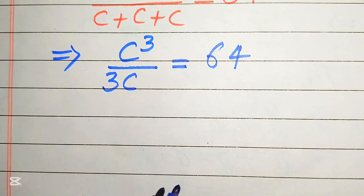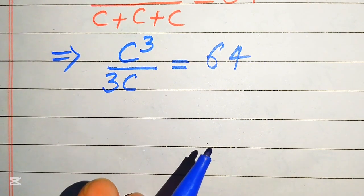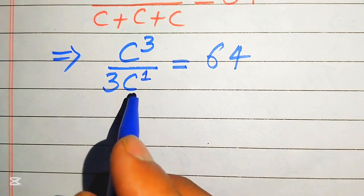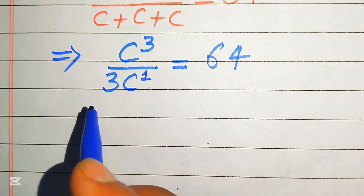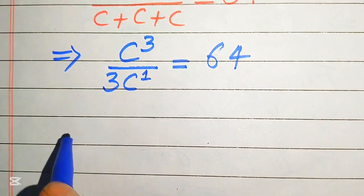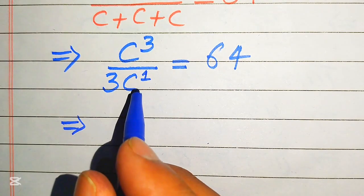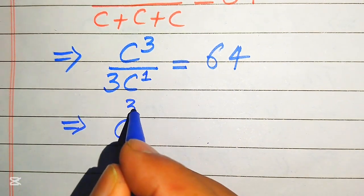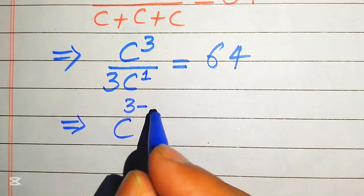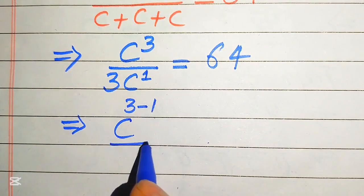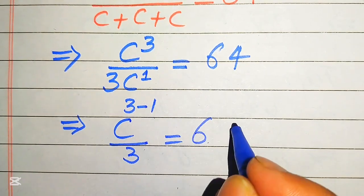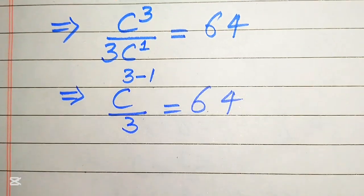Now in the next step we need more simplification. Focus on the denominator term — its exponent is 1 and the bases are the same — so we subtract the denominator exponent from the numerator exponent. This gives c to the power of 3 minus 1, divided by 3, which equals 64. That simplifies to c squared divided by 3 equals 64.